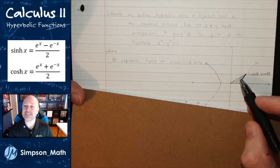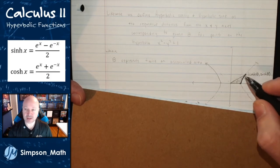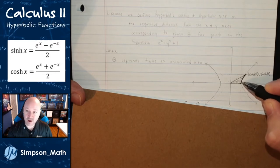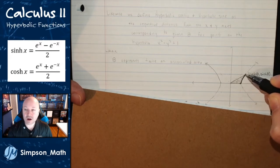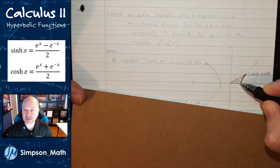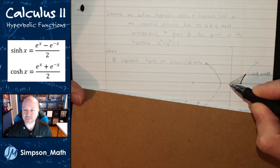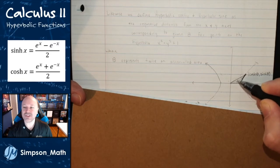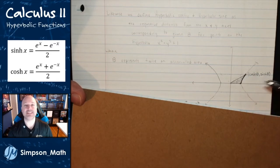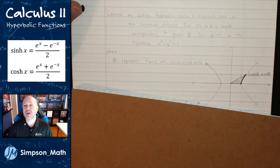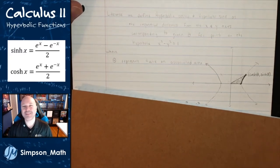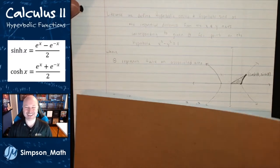This shaded area — which has a little arc to it along the hyperbola and a straight line to the center — that shaded area doubled is theta. So that's hyperbolic functions: sine and cosine.